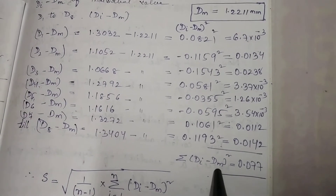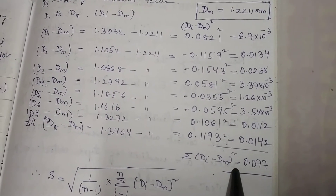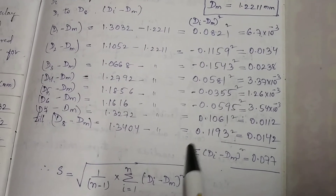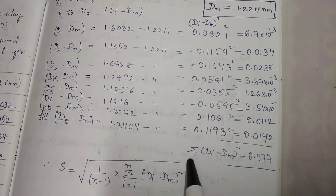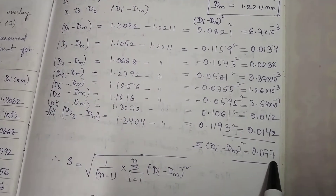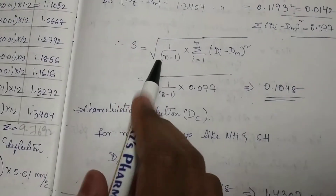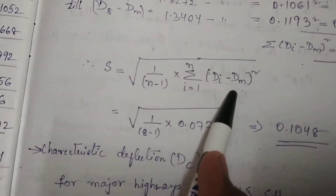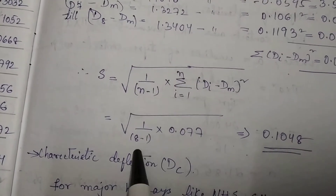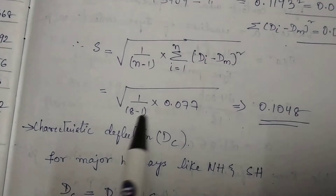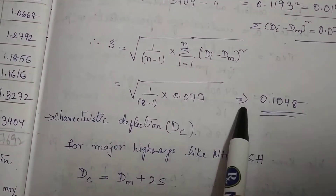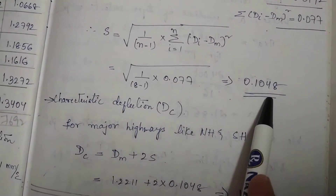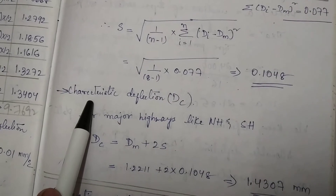We sum up all values of (Di minus Dm) squared. The summation of (Di minus Dm) squared equals 0.077. Substituting into the standard deviation formula with n equals 8, we get S equal to 0.1048.